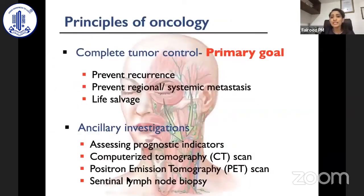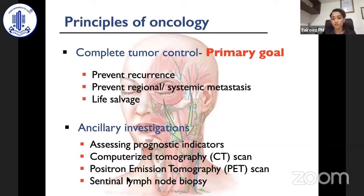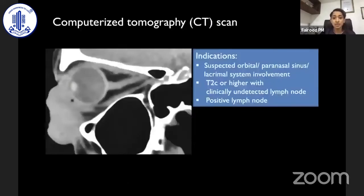The principles of treatment for sebaceous gland carcinoma are the same as any oncology principle — primarily surgical excision of the tumor to prevent recurrence and improve mortality rate. Ancillary investigations play a major role, including computerized tomography, PET scan, and sentinel lymph node biopsy, which we will discuss in subsequent slides.